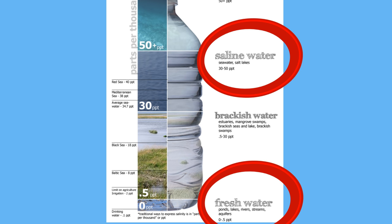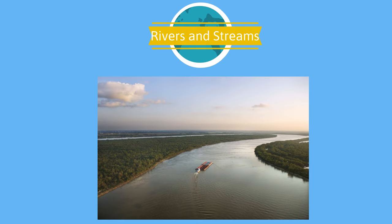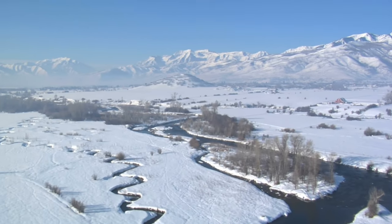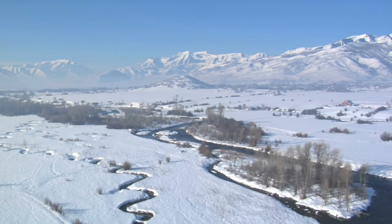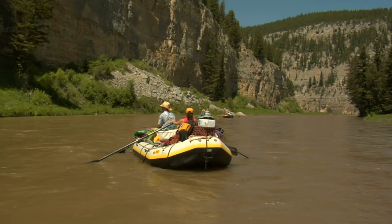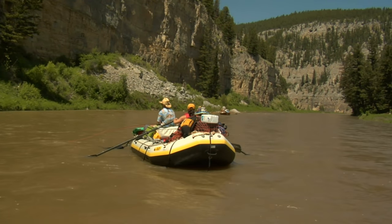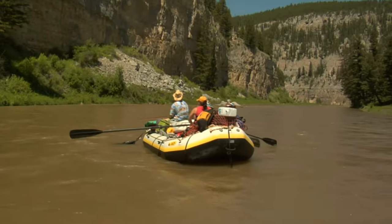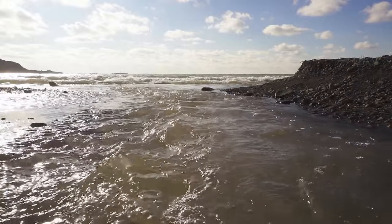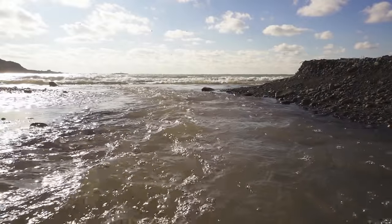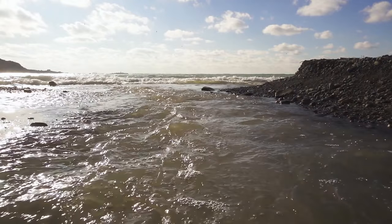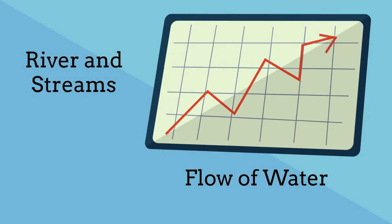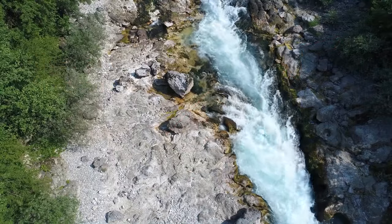Let's take a look at these freshwater biomes. Rivers and streams: the water in rivers and streams flows in one direction, beginning at the source called a headwater and traveling to the mouth where the flowing water empties into a larger body. The slope of the landscape determines the direction and speed of the water flow. When the slope is steep, water flows quickly.